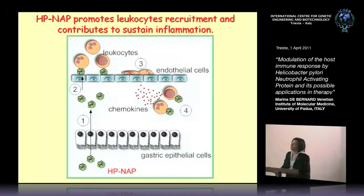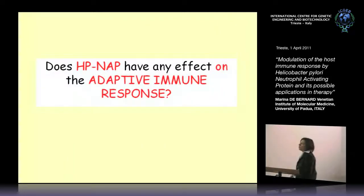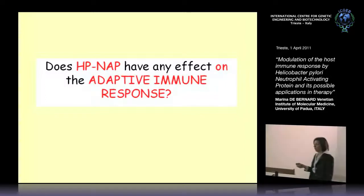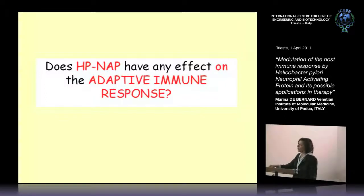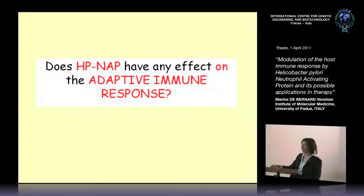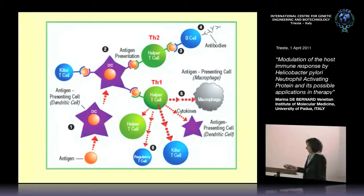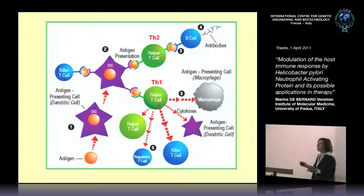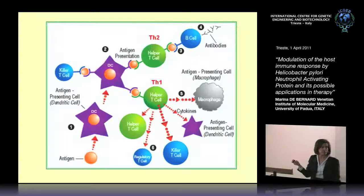After this part of the study, we wondered whether H. pNAP had any effect on the adaptive immune response also. Before going into detail, I just want to give you some background. Until now we saw macrophages, which are crucial in the first phase of inflammation, but I did not say anything about dendritic cells.